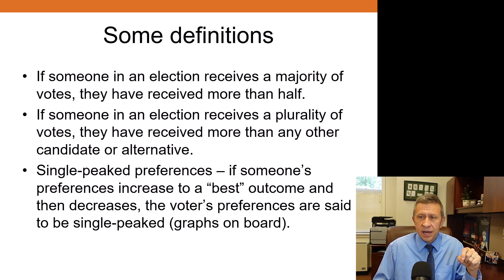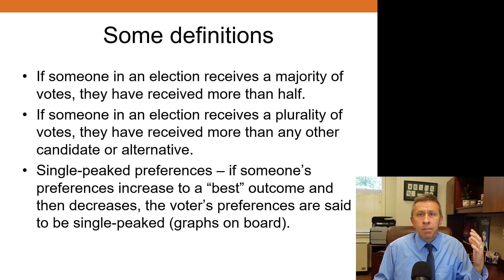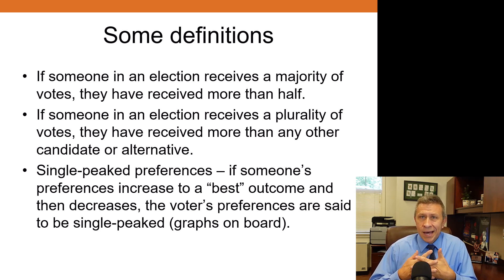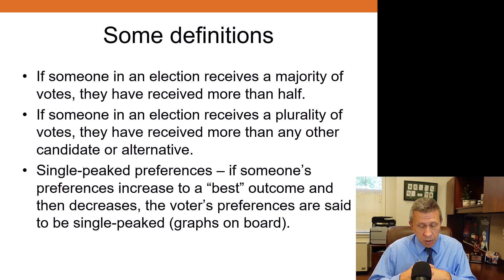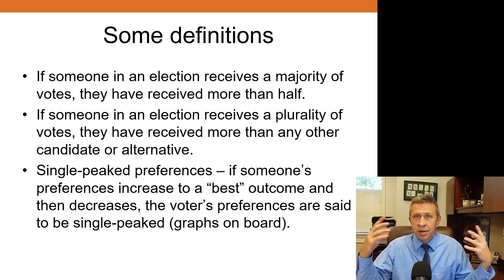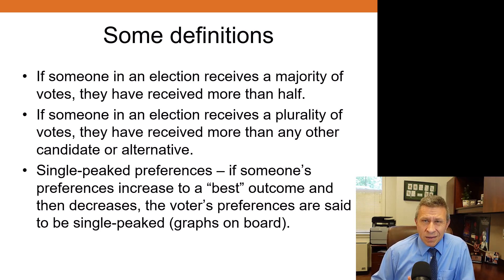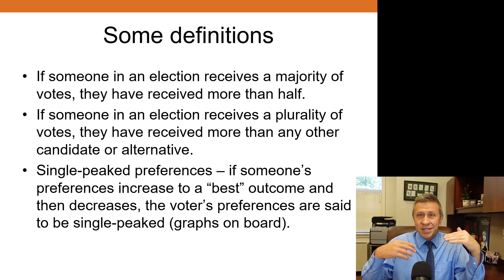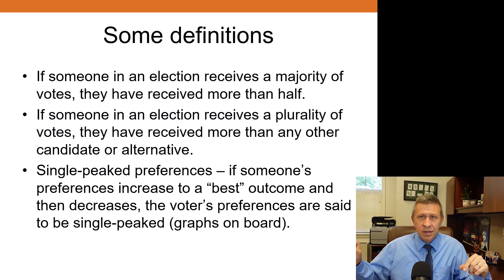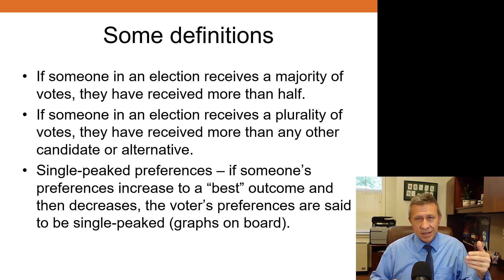Another thing to define is the idea of single peaked preferences. If someone's preferences increase to some best outcome but then decrease, their preferences are single peaked. For example, think about how much money to spend on a party. You might decide that $200 is optimal. Anything less, say $100, is not so good — every dollar closer to $200 is better. Once you hit $200 you're at the max, and every dollar after is a little wasteful and drops in value. That's single peaked preferences.